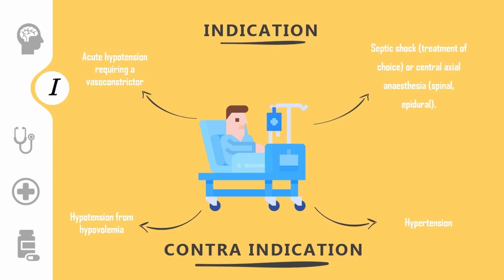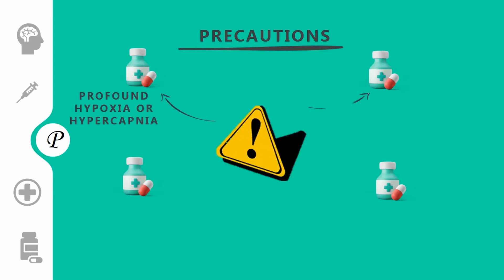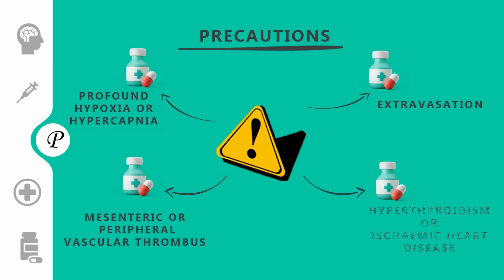Noradrenaline should be given with precautions in patients with hyperthyroidism, ischemic heart disease, mesenteric or peripheral vascular thrombosis, extravasation, profound hypoxia, or hypercapnia. Since the drug causes peripheral vasoconstriction, it may lead to an increase in the area of ischemia and infarction. Hence, for these patients, precaution should be taken before administering noradrenaline.